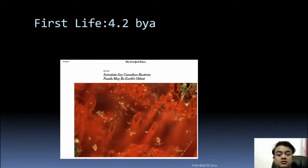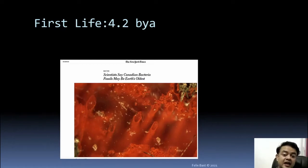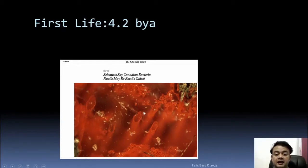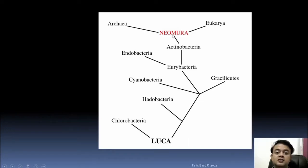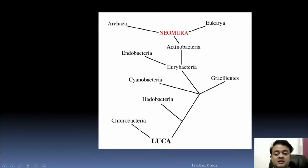Scientists now say the first life originated around 4.2 billion years ago. Tube-like structures from Canada are thought to be the earliest bacteria. LUCA is accepted to be more like a bacterium than an archaebacterium. From LUCA, almost all the early tree of life was dominated by Eubacteria, and then Archaebacteria and Eukaryotes originated from Neomura — the last common ancestor between Eukaryotes and Archaebacteria.